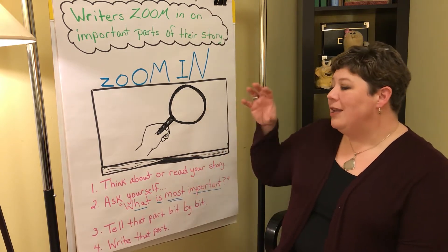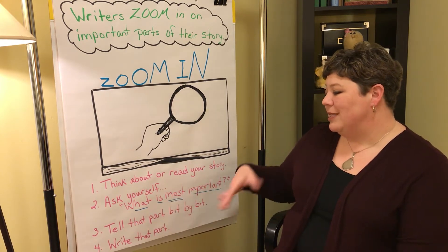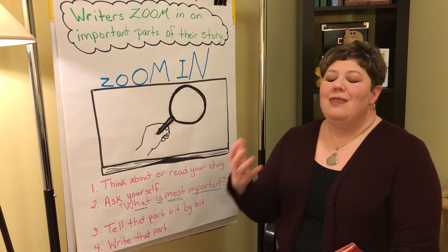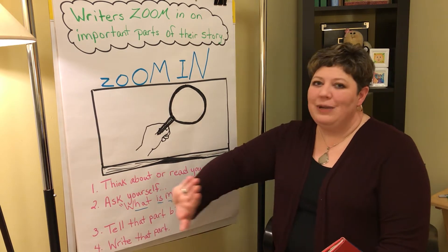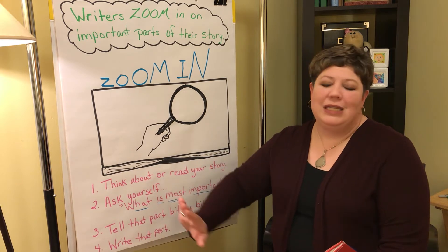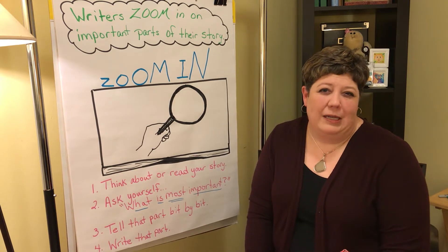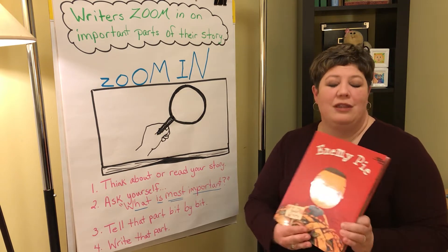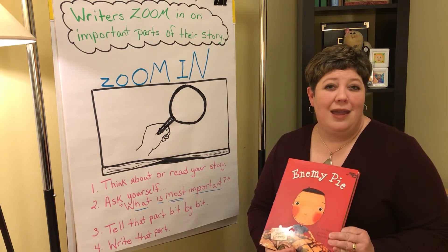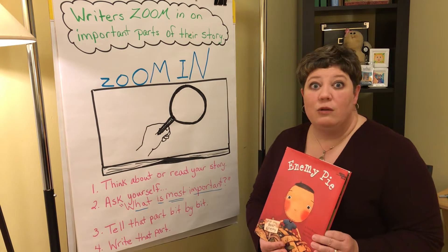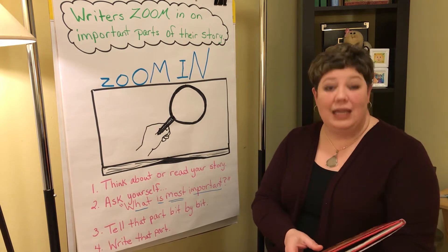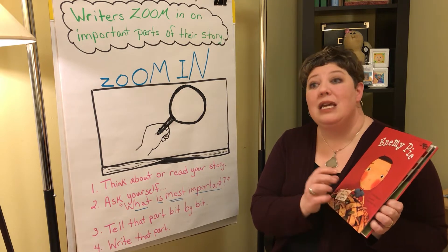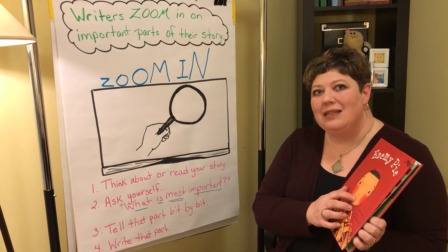When you're trying to zoom in and deciding if something is important or not, that's when you want to get rid of something that doesn't really help the story go on. I'm going to show you what I mean with a part in Enemy Pie, a book that some of us know really well. It can help me think about how an author like Derek Munson did this in his book.